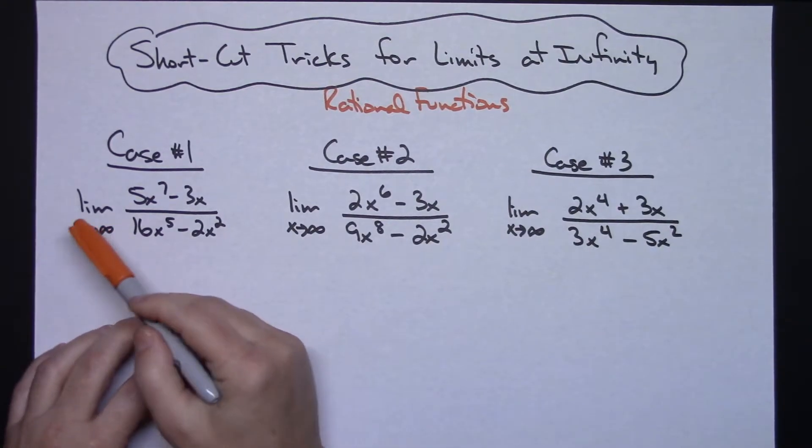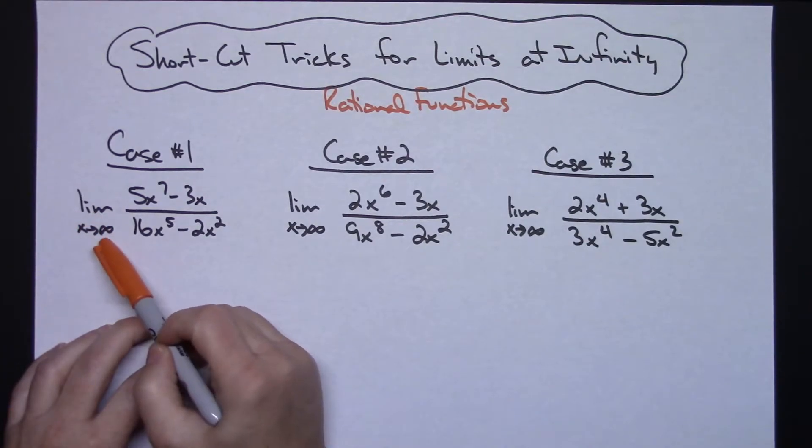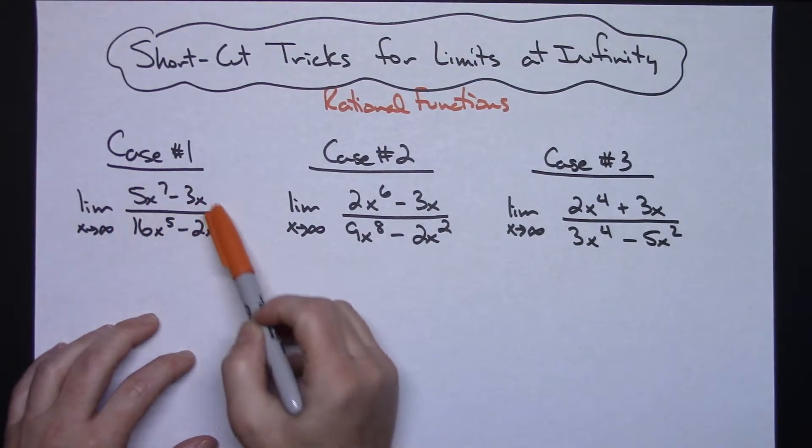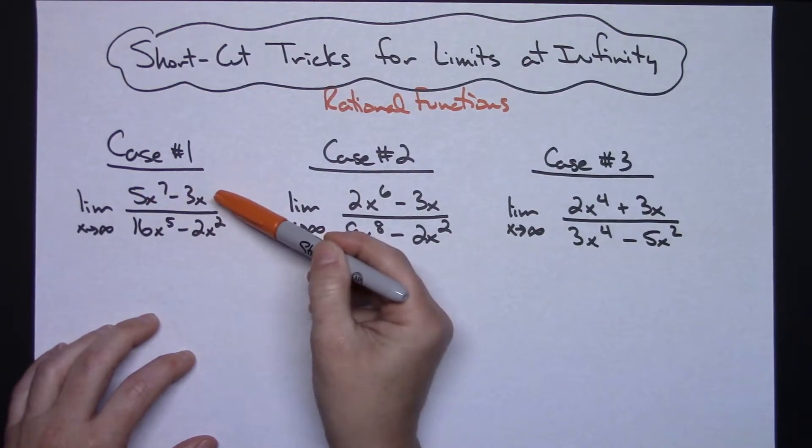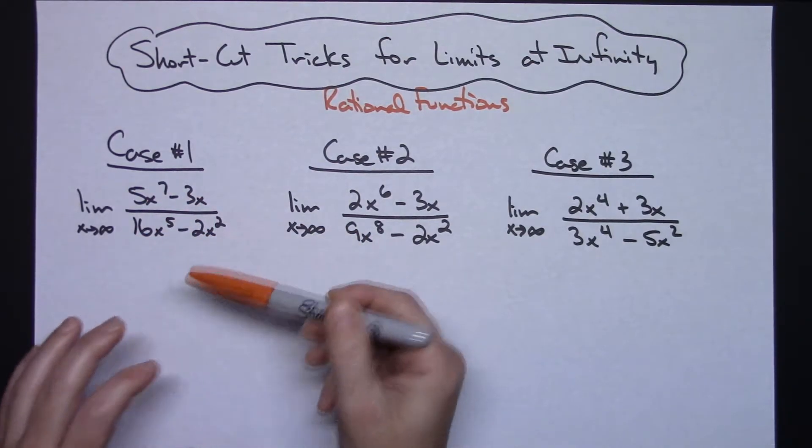In this first case you've got the limit as X approaches infinity and you've got a rational function. You're going to take a look at that degree in the numerator and the degree in the denominator.